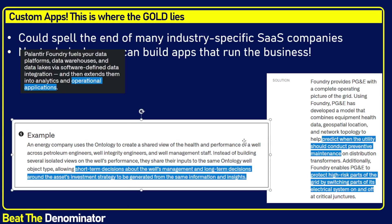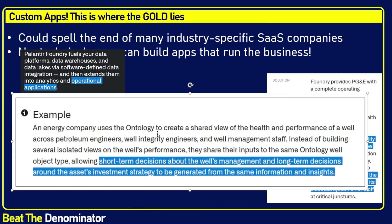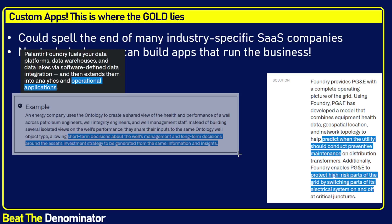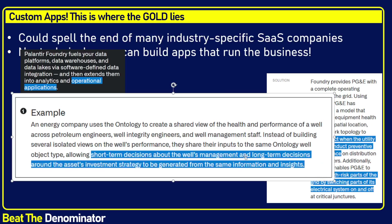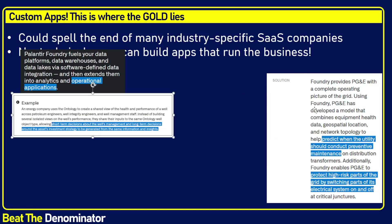Here's another example — from an energy company that uses the Ontology, their digital twin, to have a complete view of petroleum operations across their wells. The software, as the company shares input with Ontology, tells them short-term decisions for wealth management, long-term decisions for asset investment strategy, and how to maximize the wealth extracted from that asset. So it's the digital twin that informs you what to do for your organization to become more performing. The role of the manager is not to make these decisions — big data gives you these decisions.